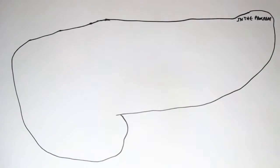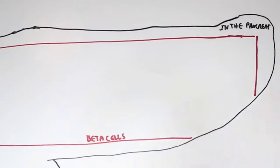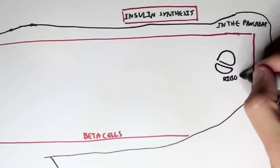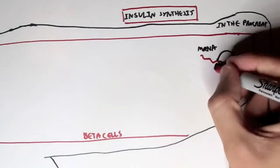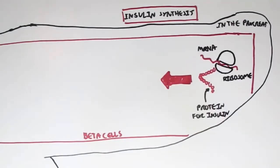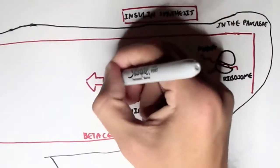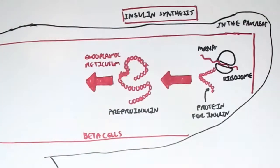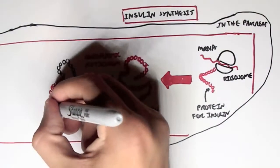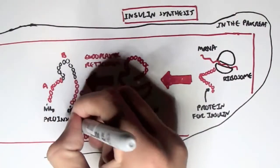Now let's look at insulin synthesis. Insulin synthesis occurs in the pancreas, particularly in the beta cells, because it is within these beta cells that insulin is secreted from. The ribosome translates mRNA into a protein for insulin. This protein forms what's called pre-pro-insulin, which is a long polypeptide. The pre-pro-insulin then gets transported into the endoplasmic reticulum where it gets sorted out and cleaved to form pro-insulin.